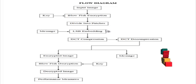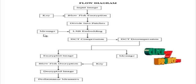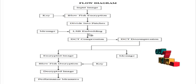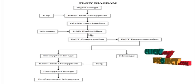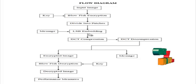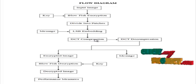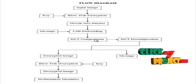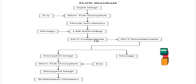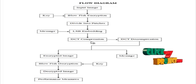In the image patches, the message obtained from the user is embedded based on the least significant bit embedding process. After that, the embedded image is compressed using the DCT compression process. This completes the sender side process.